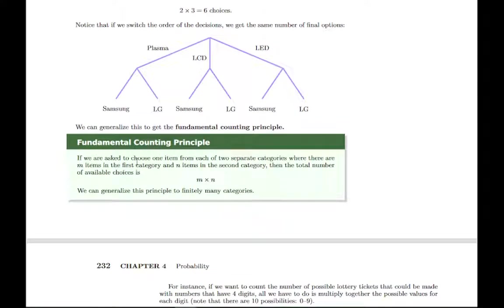But the fundamental counting principle says if you have to make two decisions, and you know you have a certain number of options for each one, if you multiply those together, you get the total number of possible results. And you can do this if you have three choices or four choices to make. You just multiply them all together.